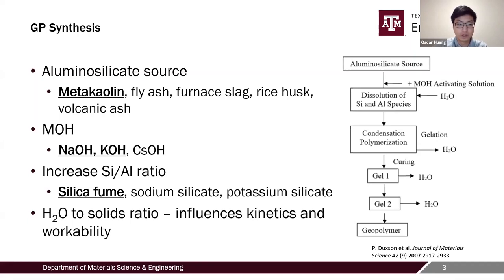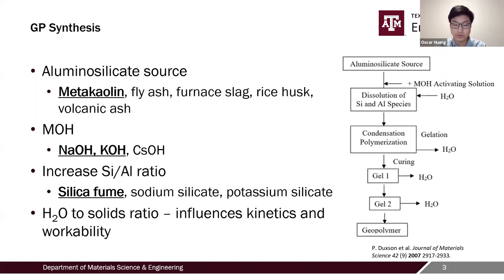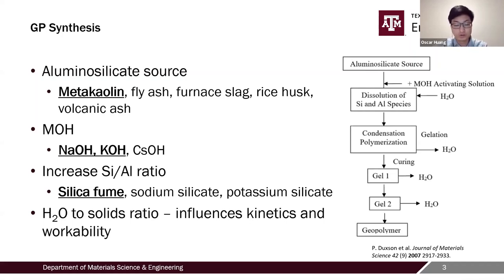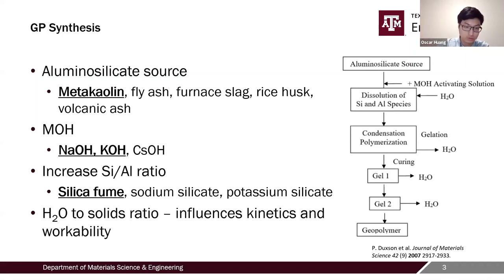For the alkali hydroxide, we are using sodium and potassium. To vary the silicon-to-aluminum ratio — one of the key parameters — we have chosen to use silica fume. If we were to use sodium or potassium silicate, increasing the silicon-to-aluminum ratio would also increase the amount of alkali in the system, making it more complicated. Similar to Portland cement, the water-to-solids ratio is also important as it influences curing time, setting time, and workability of the fresh paste.